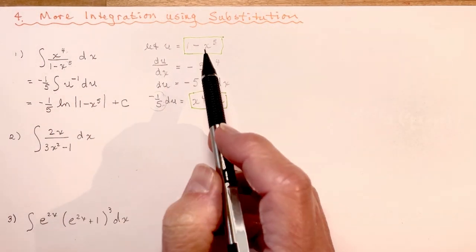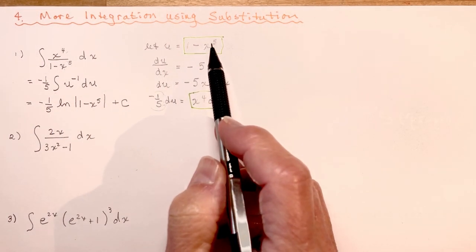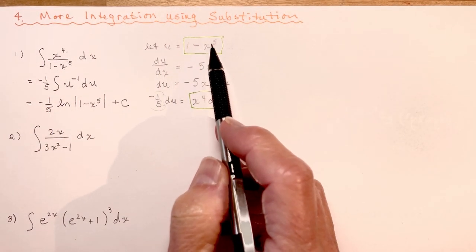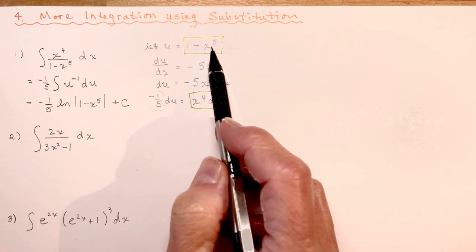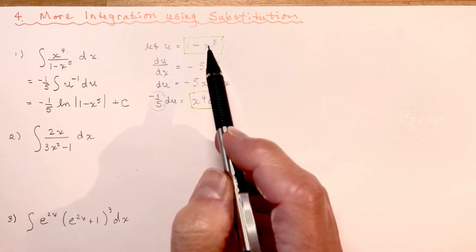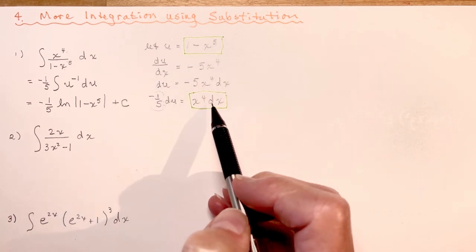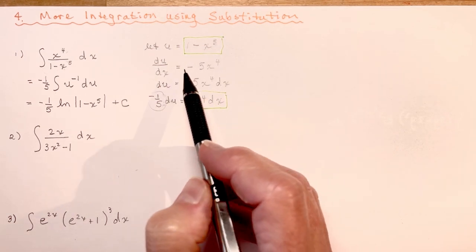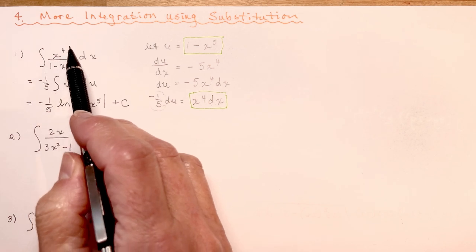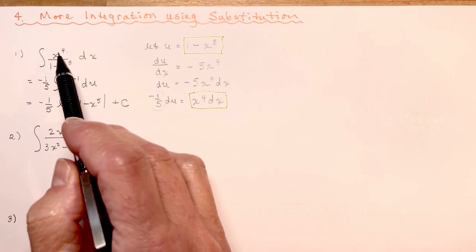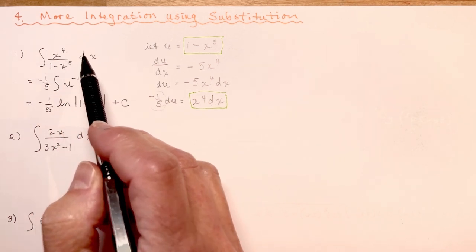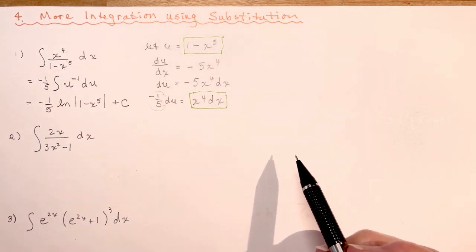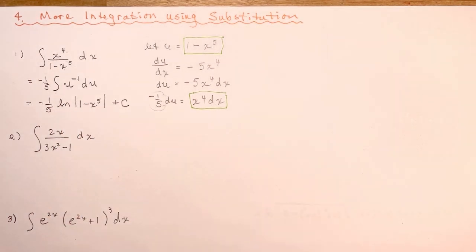So: decide what you're going to use for your u value, take the derivative of it, and adjust it if you need to in order to get what you had in the numerator. Let's do a few more.